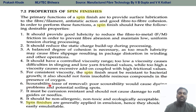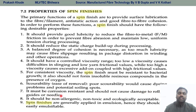The sixth important desirable property is scourability, or ease of removal. Poor scourability could lead to dyeing problems and potential soiling spots. It must be corrosion resistant and should not cause damage to the rollers, guides, or needles, because the yarn is passing through different guides, rollers, and needles. The eighth desirable property is that it should be non-allergic, non-toxic, and ecologically acceptable. And the ninth is that since spin finish is generally applied by immersion, it should be easily emulsifiable.